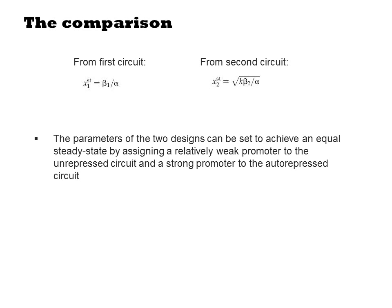They go on to analyze and discuss other aspects of the math and its dependence on variables you might think to tune in the system. In addition to the response time, there is also a different steady state concentration. The first circuit reaches a steady state concentration of beta over alpha, while the second circuit reaches the square root of K beta over alpha.